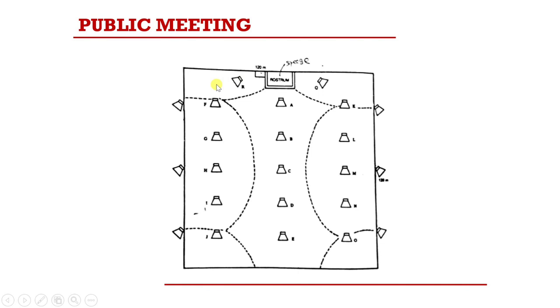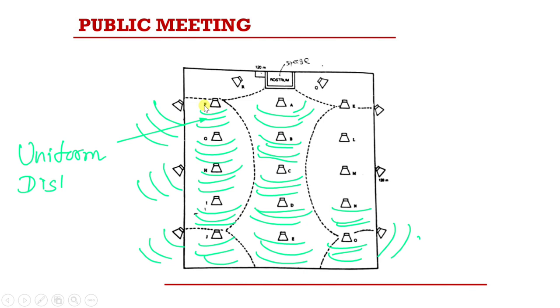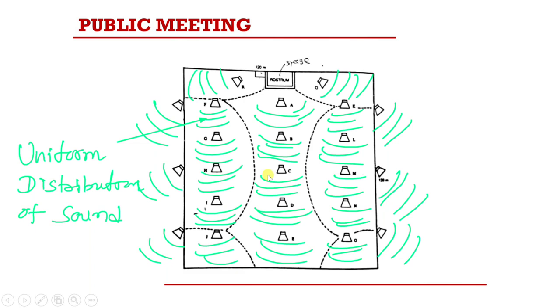Now let us look at different PA system installations. In a public meeting PA system, there is a stage and speakers are distributed in such a way that there is uniform sound distribution across the public area. Speakers are positioned in this region to produce uniform sound intensity throughout the public meeting venue.